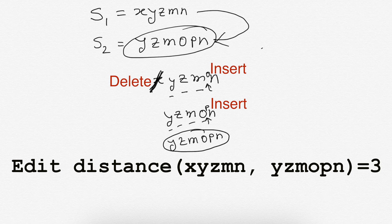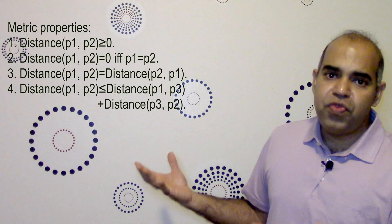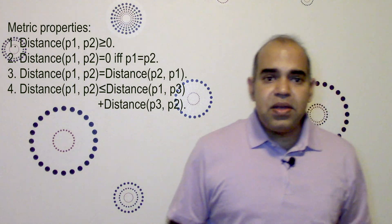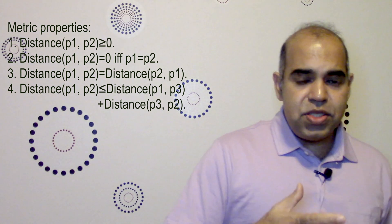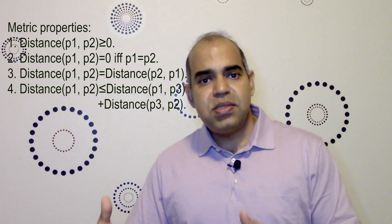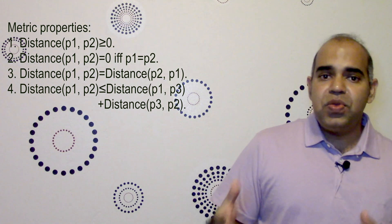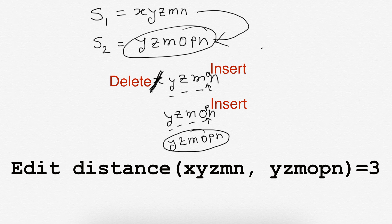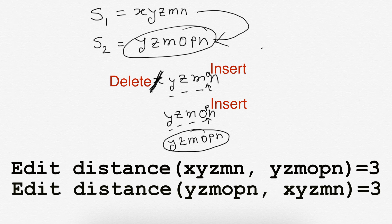Edit distance is a true distance measure, so it holds all four axioms required in a distance formula. As a result, the edit distance between S1 and S2 is equal to the edit distance between S2 and S1. If you attempt to convert YZMOPN to XYZMN, you will see that you need a minimum of three edits. Please do it as an exercise.